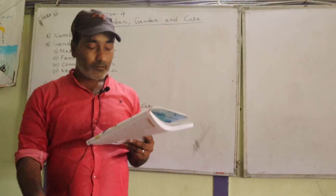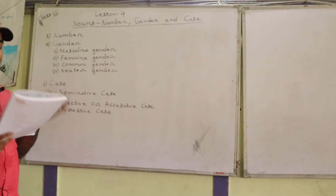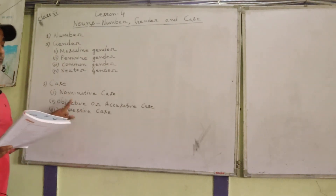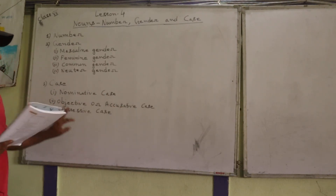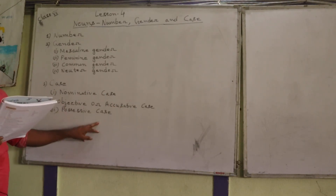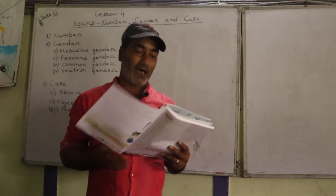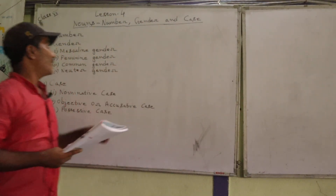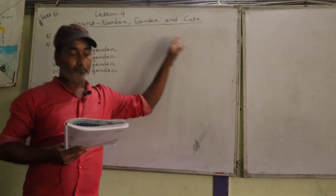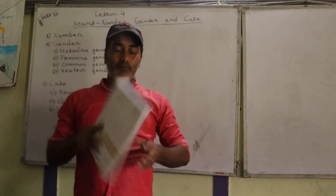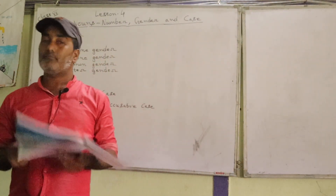So, in this way, what we have learned about case is that generally in class there are three kinds of cases: nominative case, objective or accusative case, and possessive case. In this lesson — lesson 4 — we have learned about number, gender, and case. In the next class, I will give you some notes. So, today, this much only.